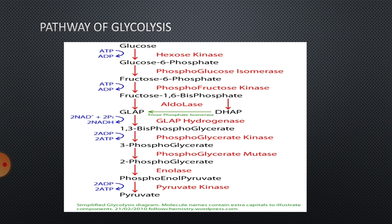The fourth reaction is cleavage — that means breaking down. Fructose-1,6-biphosphate is broken down into two triose molecules which are similar: glyceraldehyde phosphate and dihydroxyacetone phosphate. This reaction is called cleavage and the enzyme is aldolase. Glyceraldehyde phosphate directly involves in the further reactions of glycolysis, whereas DAP cannot involve like that. So DAP must be changed to GAP in order to continue the process of glycolysis. So, 5 reactions have been completed.